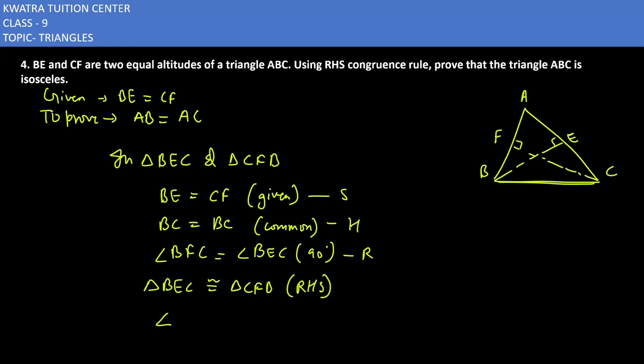So I can say that angle B would be equal to angle C, and we know that the sides opposite to equal angles are always equal.